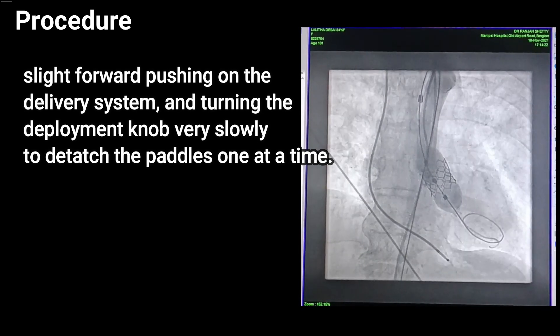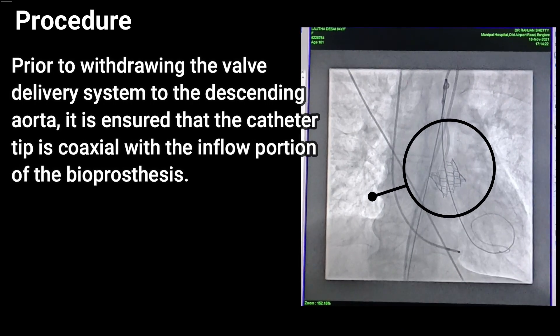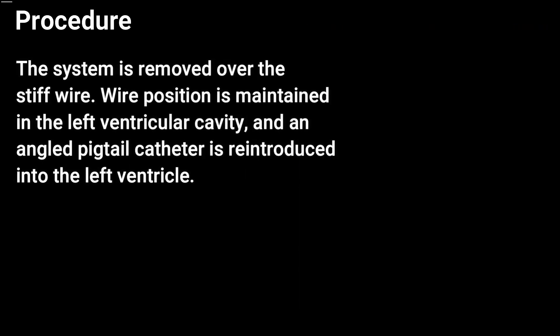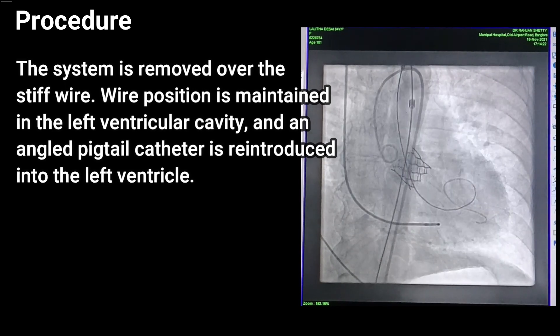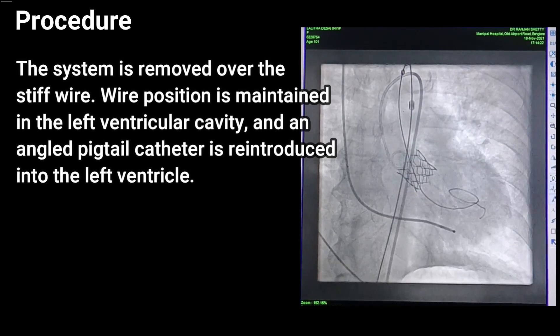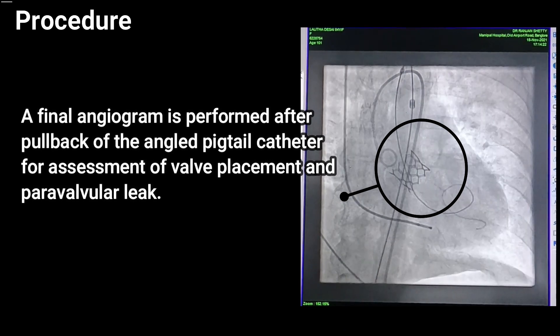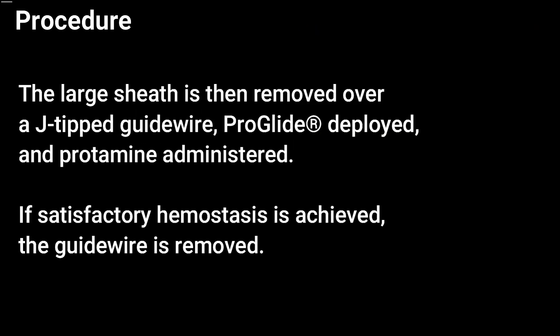Prior to withdrawing the valve delivery system to the descending aorta, it is ensured that the catheter tip is coaxial with the inflow portion of the bioprosthesis. The system is removed over the stiff wire, wire position is maintained in the left ventricular cavity, and an angled pigtail catheter is reintroduced into the left ventricle. The final angiogram is performed after pullback of the angled pigtail catheter for assessment of valve placement and perivalvular leak.